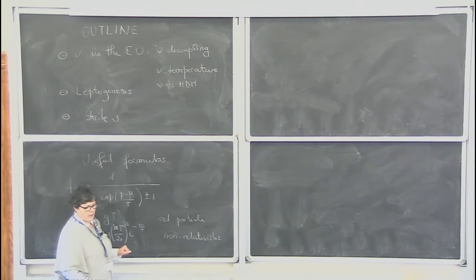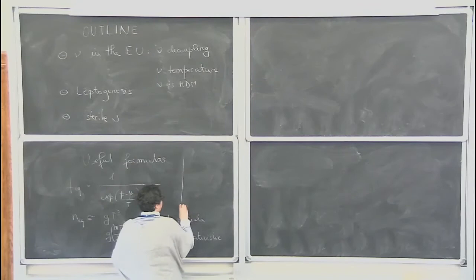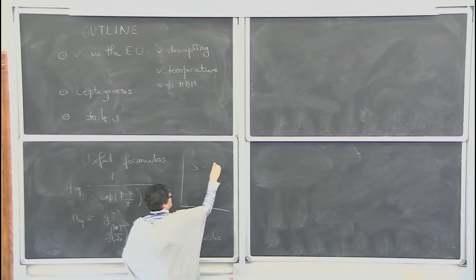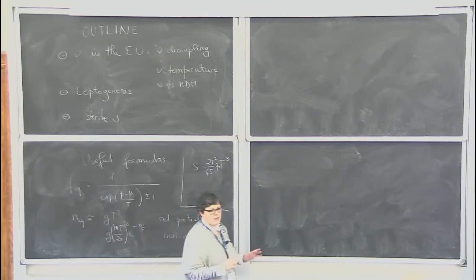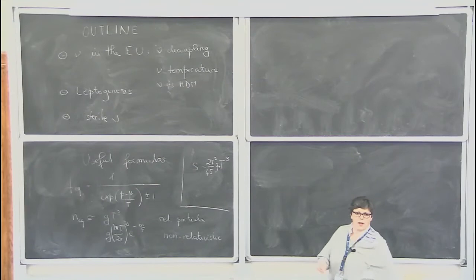If you have a non-relativistic particle, then you have the number of degrees of freedom and an exponential of m over T, with an additional term (mT over 2π)^(3/2) in front. Many things are done order of magnitude, so I will often ignore factors of π and 2. What is important is that for relativistic particles the number density scales as T cubed, while for non-relativistic particles the equilibrium density is exponentially suppressed as temperature drops. The entropy density also scales as T cubed, given by (2π² g_star)/45, where g_star is the number of relativistic degrees of freedom.